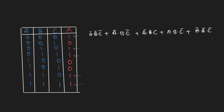So instead of this, we could simply use K-maps to solve this. Let's look at how we do that. We'll make a table first where we club all our inputs and outputs together. On one row you have A, and on the columns B and C. A can either have the value 0 or 1. Combinations of B and C can be 00, 01, 11, and 10. Now let's check: for A=0 and BC=00, the output is 1.